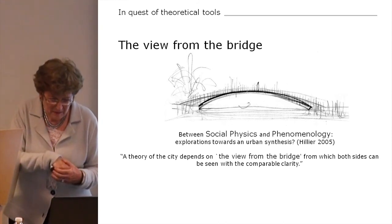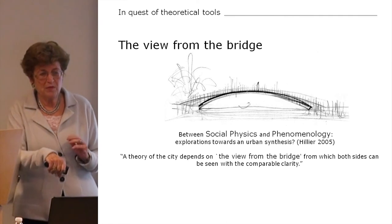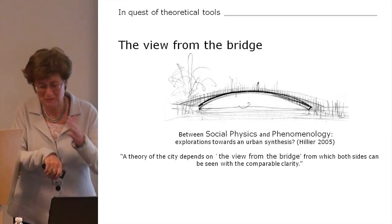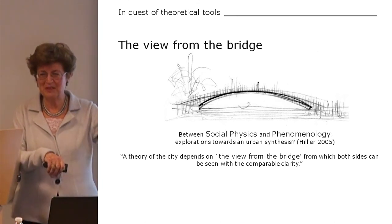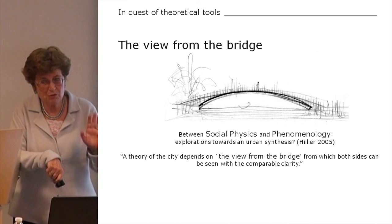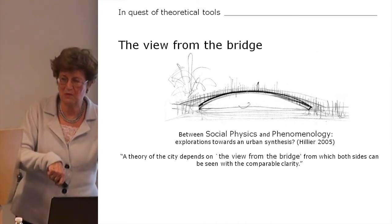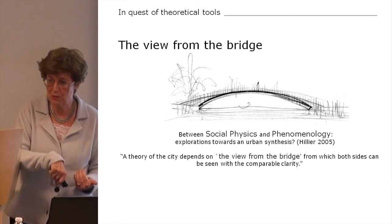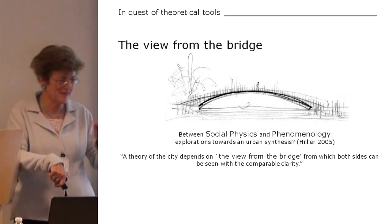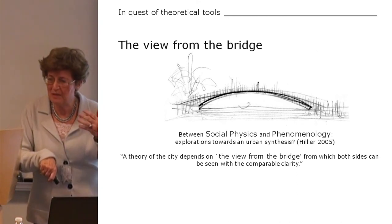I embrace this kind of situation. Helio says that the theory of the city depends on the view from the bridge, from which both sides can be seen with comparable clarity. I realized that I've been walking on one side of the rift — basically a phenomenological point of view. Not that I really knew it was phenomenology when I started writing about Minoan architecture, but it seems to be. So I decided to cross the bridge and go over to the other side and see what I can get there. To my surprise, I found quite a lot of things I could bring back home.